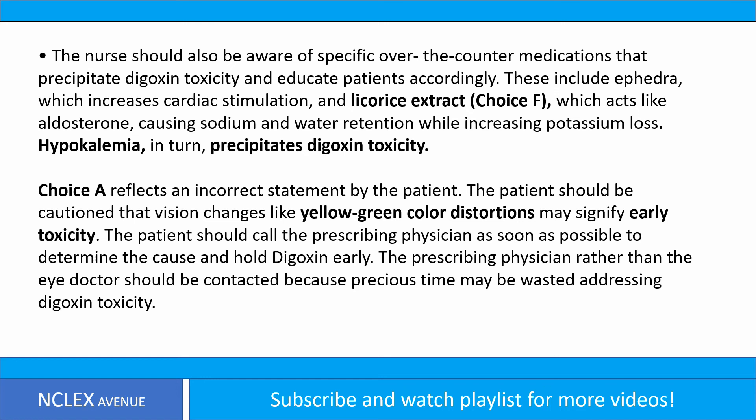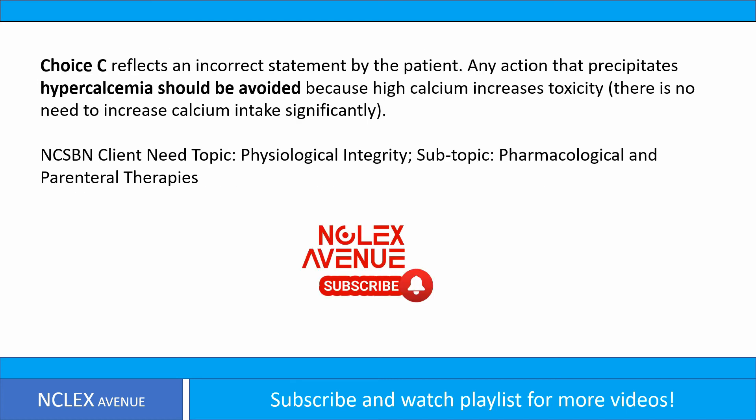Choice A reflects an incorrect statement by the patient. The patient should be cautioned that vision changes like yellow-green color distortions may signify early toxicity; the patient should call the prescribing physician as soon as possible — not the eye doctor — because precious time may be wasted addressing digoxin toxicity. Choice C also reflects an incorrect statement: any action that precipitates hypercalcemia should be avoided because high calcium increases toxicity, so there is no need to increase calcium intake significantly.